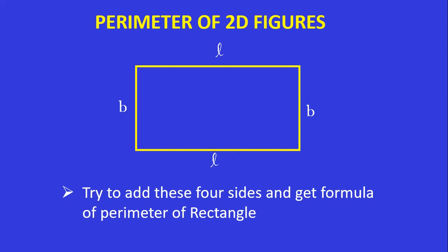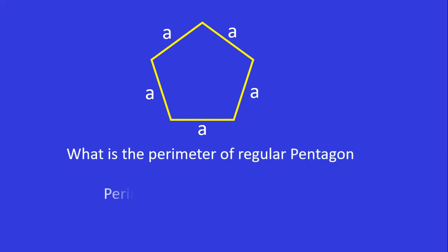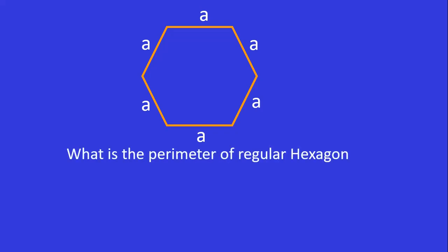Now let us generalize the formula for all regular polygons. Take one regular polygon of 5 sides, which is called a pentagon, with measurements of A centimeters each. The perimeter of this regular pentagon is 5A. Let us move to the next regular polygon with 6 sides, called a hexagon, whose side lengths are A centimeters each. The perimeter of this regular hexagon is 6A.